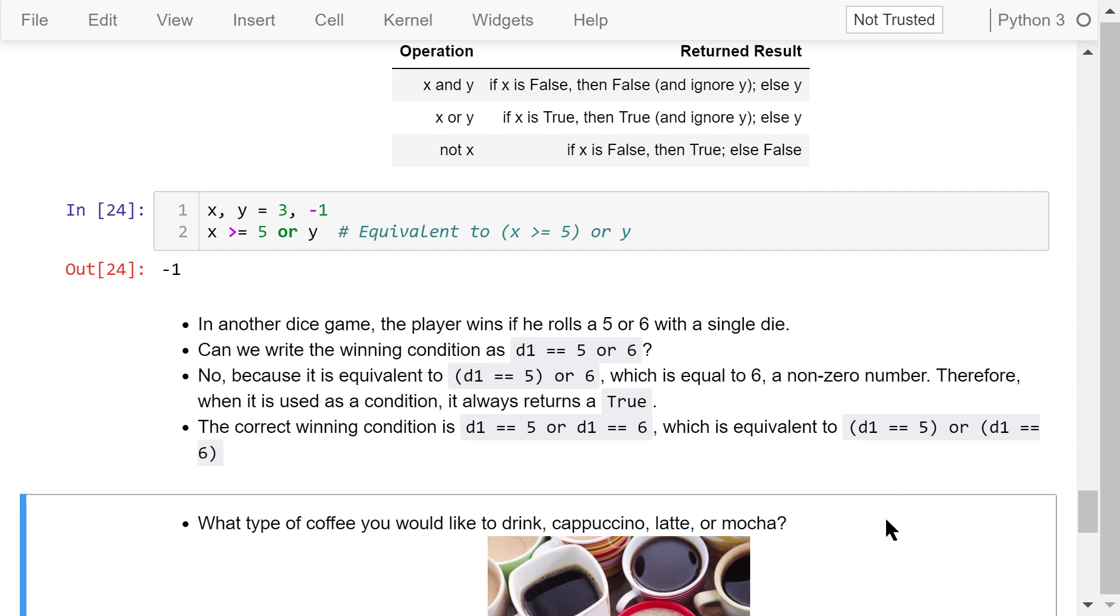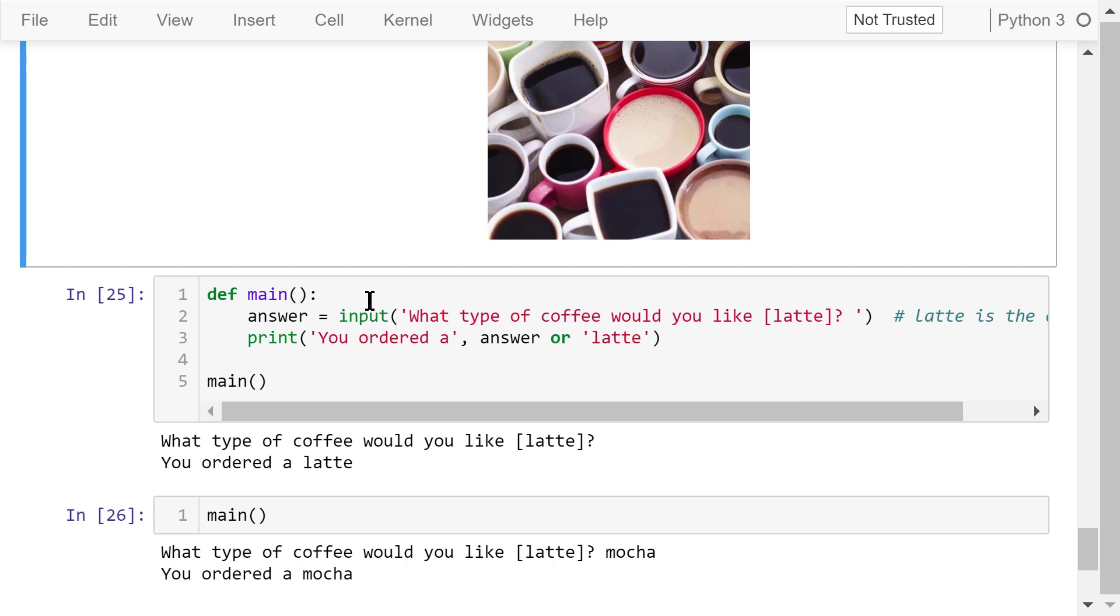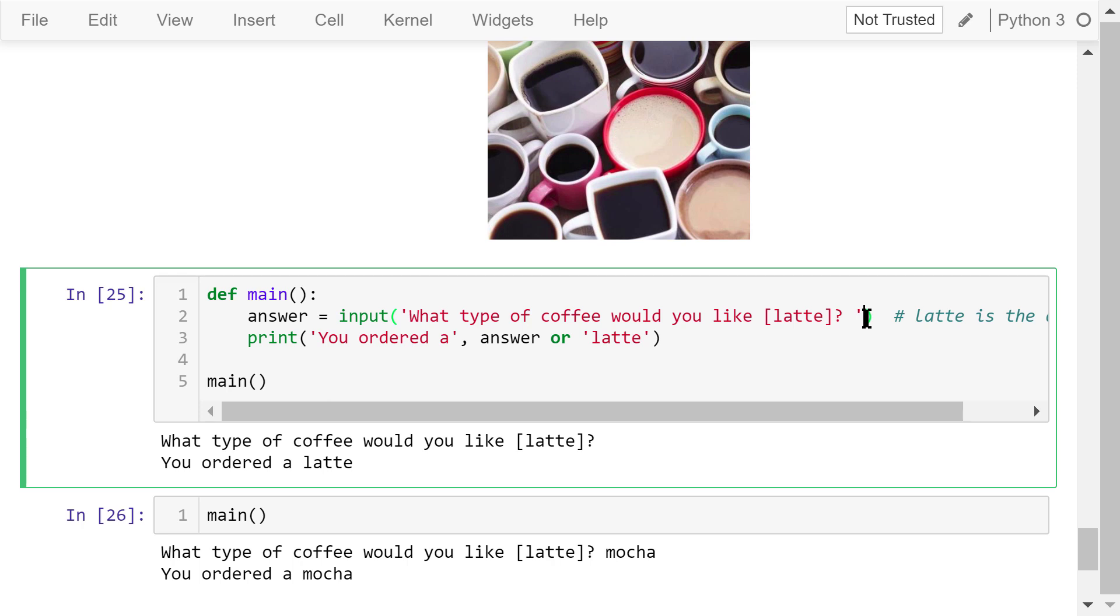The last example. Imagine that you are in a coffee shop and the clerk asks you what type of coffee you would like to drink: cappuccino, latte, or mocha. Let's implement it in Python. We define the main function. We prompt the user with the message what type of coffee would you like. Latte is the default answer. We wait for the user to type in the answer. Then we print you ordered a answer or latte. If the answer is empty, that means the user directly hits enter. Based on the short circuit rule, the OR operation will just return latte.